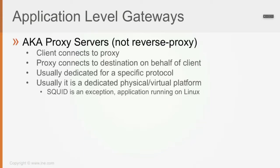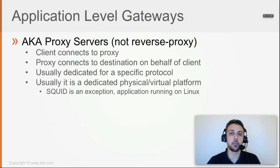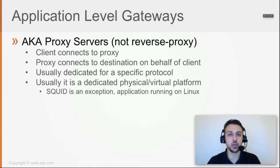Application level gateways, also known as proxy servers, are not the same as reverse proxies. A proxy server controls traffic for specific applications going from the LAN side towards the internet, while a reverse proxy is something else — it's like a web application firewall. You put a reverse proxy in front of your publicly available servers so that everyone from the internet speaks with the reverse proxy to access your web server, FTP server, or whatever, and then the proxy initiates another session to your real servers. So the reverse proxy is something different than a proxy.